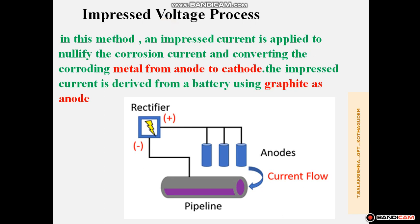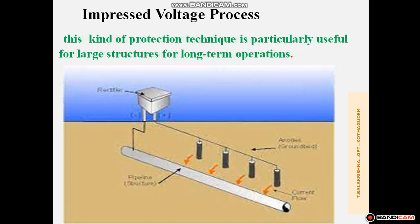In this process, the pipeline is connected to the negative terminal of the battery. The anode is converted to cathode. This process is called the impressed voltage process. This kind of protection technique is particularly used for large structures for long-term operations.